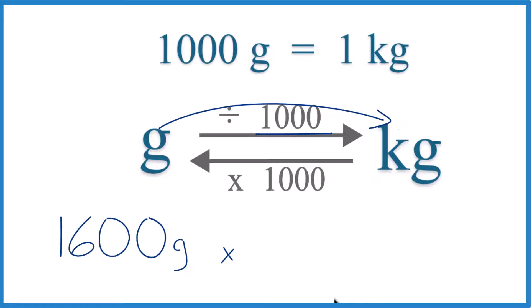So we have grams on top. We want to have that on the bottom so it cancels out. So we use this conversion factor here, 1 kilogram per 1,000 grams, just like up here. Now we have grams on top and the bottom, they cancel out. We're left with kilograms.